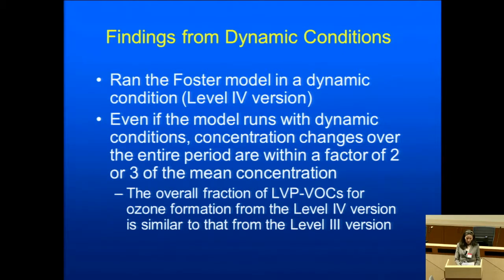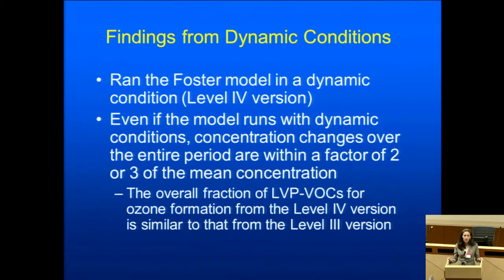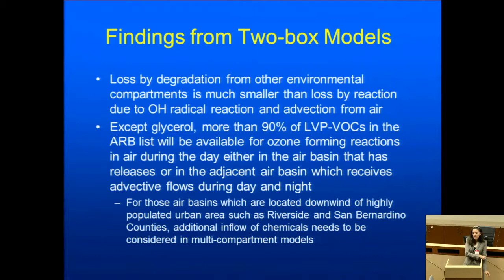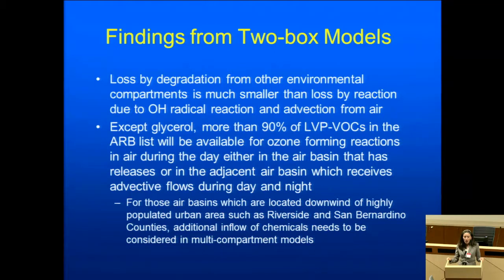During the nighttime, loss by reaction in air with OH radicals is greatly reduced due to very small OH radical concentration at night. Loss by reaction in other compartments such as soil, vegetation, and the urban surface film in the Foster model is negligible for most compounds. From the Monte Carlo uncertainty analysis, wind speed and reaction half-life in air were the two most influential parameters. The Foster model dynamic level-four version produced results within two to three of the mean concentrations, so we felt it was sufficient and simpler to leave the model in a level-three version. Looking at the two-box model, the coupled outputs were basically the same, so it's not necessary to run it as a two-box model.